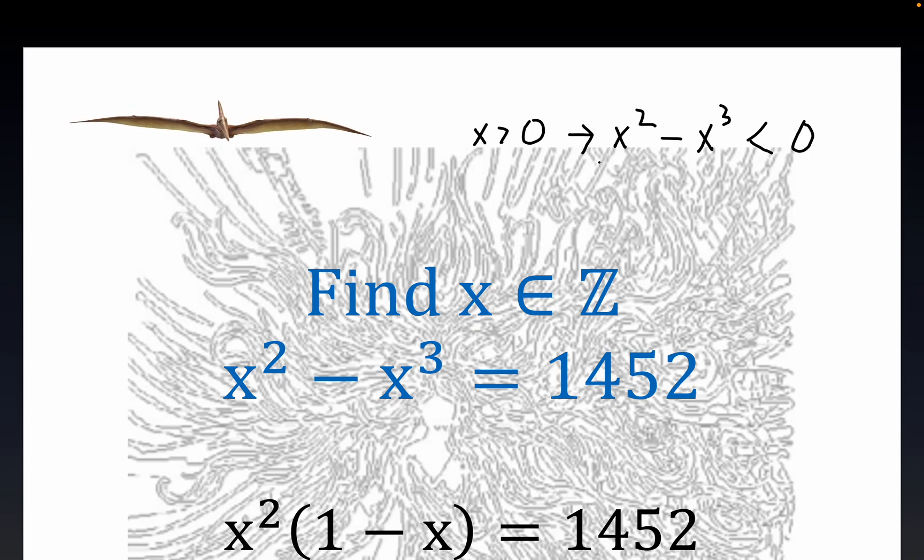So that cuts our search in half. In fact, it implies that x has to be less than zero. All of this implies that x has to be less than zero. So if you trust me that this has 36 divisors, all we have to look at is the negative divisors. Helpful information. Cuts the search in half. That's never a bad thing.